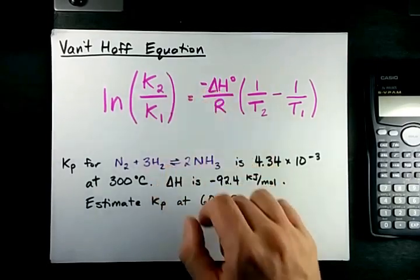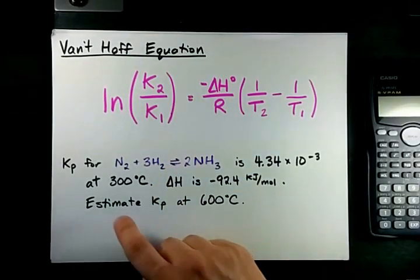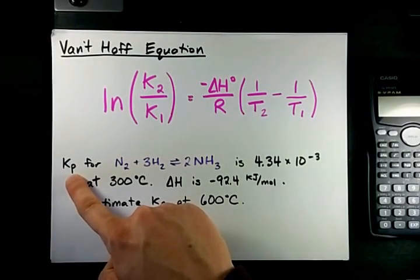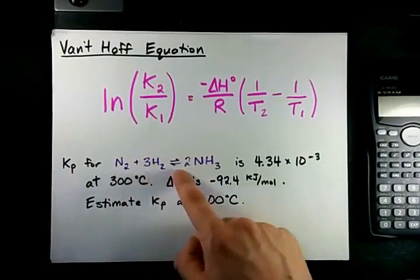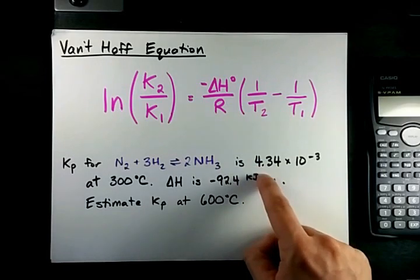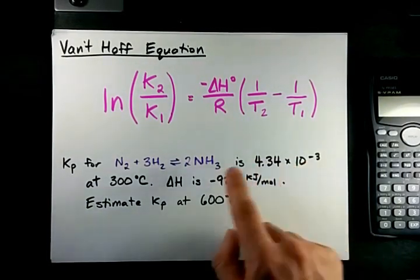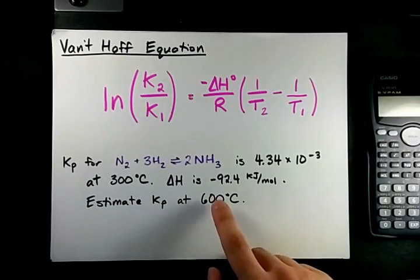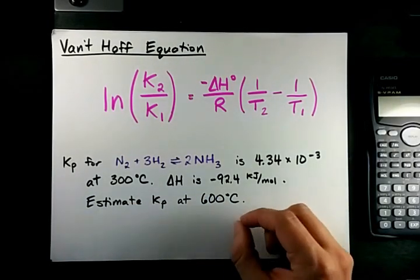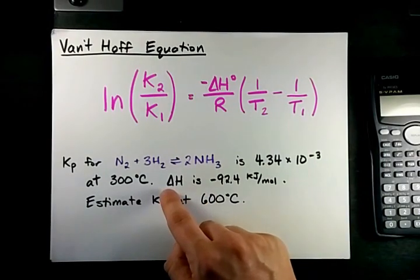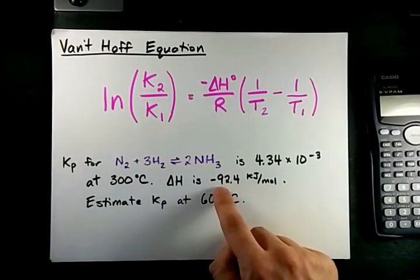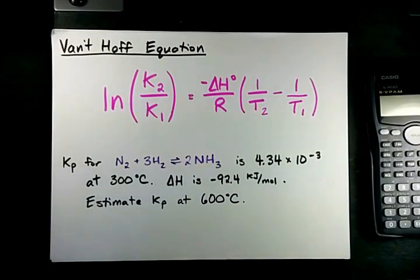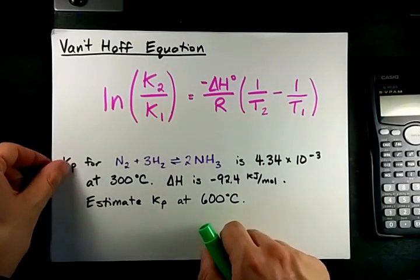You'll need the enthalpy change to do this calculation. If Kp, now this is Keq when you use pressures instead of concentrations for the Haber process, is 4.34 times 10 to the negative 3 at 300 degrees Celsius, estimate Kp at 600 degrees Celsius, that's 300 Celsius higher, and they also give you the delta H for this exothermic reaction as negative 92.4 kilojoules per mole.